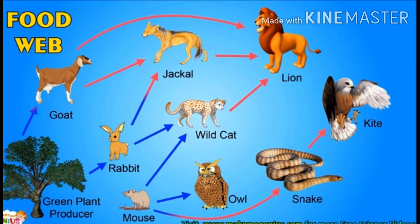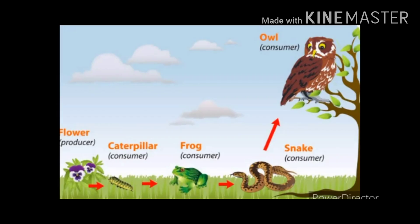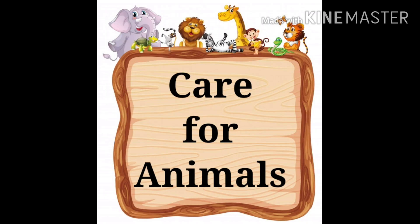If we destroy one link in the food chain, we might end up destroying the whole food chain. For example, if we remove the frog from this food chain, the population of caterpillars will increase, and the snake will have no food available. Because of this, the entire food chain will be destroyed. Many animals are being affected due to the activities of man, because man is destroying a number of food chains and disturbing food webs.